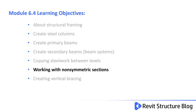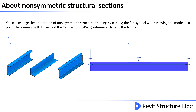Welcome to Module 6.4. In this lesson, you learn how to work with non-symmetrical sections. You can change the orientation of non-symmetrical structural framing by clicking on the flip symbol when viewing the model in plan. The element will flip around the center front-back reference plane in the family.